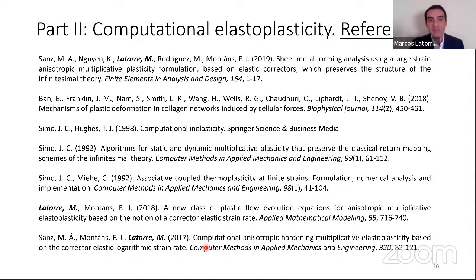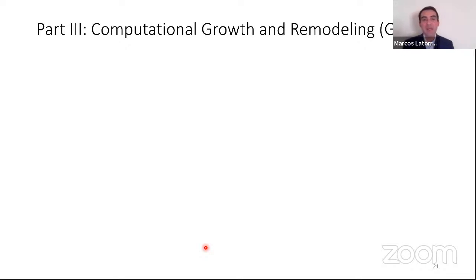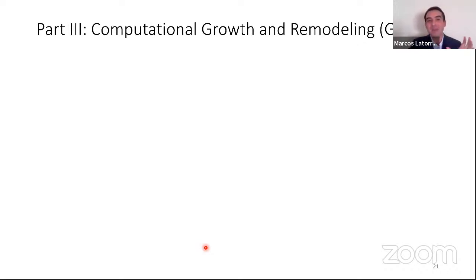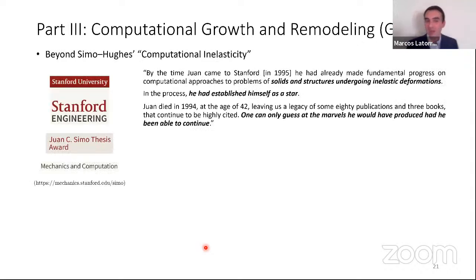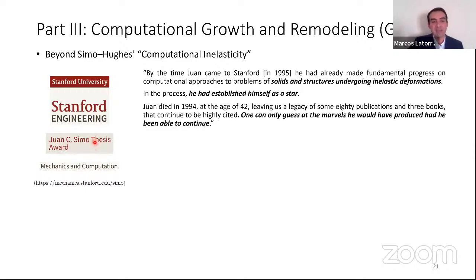With that, I finish this second part. Let's move on to the last part: computational growth and remodeling. This is part of the work I performed at Yale. Here I am showing only results related to the computational part of this inelastic theory. I would like to show a couple of sentences from the Stanford page, where they note: 'By the time Juan came to Stanford in 1995, he had already made fundamental progress in computational approaches to problems of solids and structures undergoing inelastic deformation. Juan died in 1994 at the age of 42 only, leaving us a legacy of 80 publications and three books that continue to be highly cited. One can only guess at the marvels he would have produced had he been able to continue.'